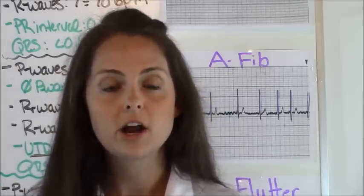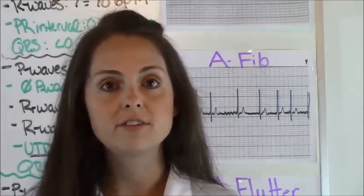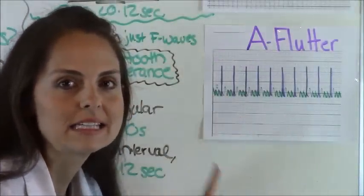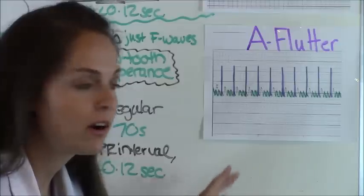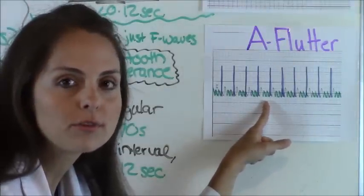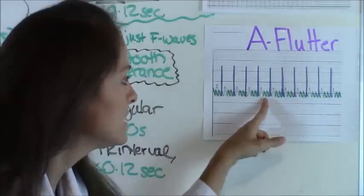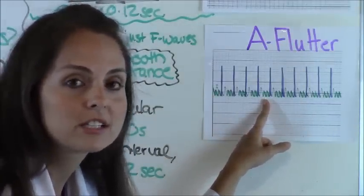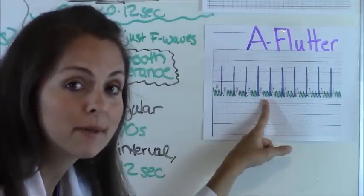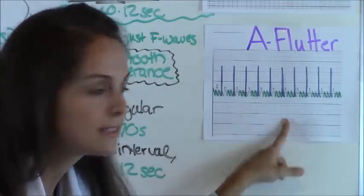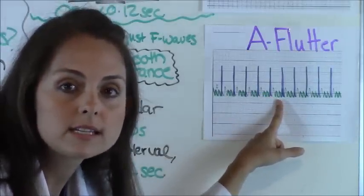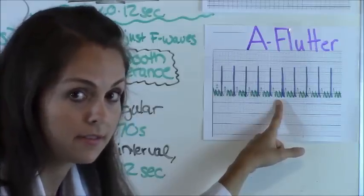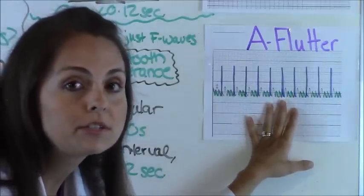Now let's move on to atrial flutter because there is a big difference between AFib and AFlutter. For AFlutter, you've probably already noticed something different — in between your T waves and QRS complexes, you have what's called a sawtooth appearance of F waves. These are actually very beautiful to see on a real patient in AFlutter. Most of the time patients will be in AFib, but when you see AFlutter it's very noticeable. And in AFib you do not have the sawtooth appearance.